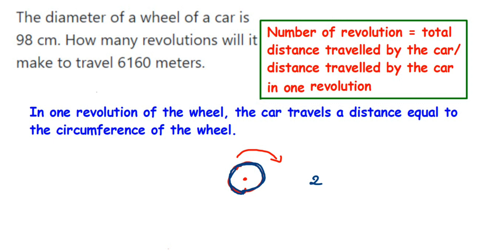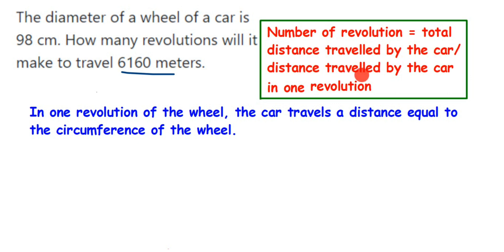The total distance given is 6160 meters. To find the number of revolutions, we divide the total distance by the circumference of the wheel. The formula is: number of revolutions = total distance traveled by the car ÷ distance traveled in one revolution, which is the circumference of the wheel.